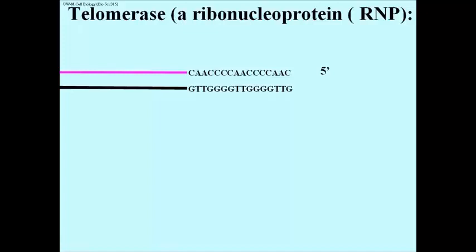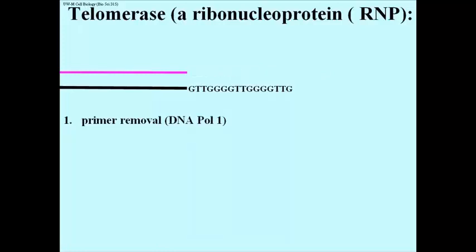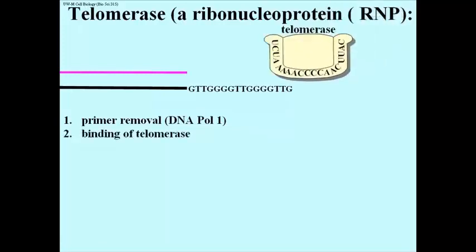Let's take a close look at the telomeric end of a DNA double helix just before removal of the primer — in this case at the 5' end of the upper strand. Step 1 is the removal of the primer, which would be accomplished by DNA polymerase 1, its exonuclease activity hydrolyzing RNA nucleotides from the 5' end.